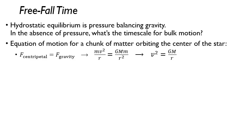The equation of motion is set up much like Kepler's third law. The centripetal force for this bulk of matter orbiting the center of the star has to equal the force of gravity. We write our centripetal and gravitational forces in the usual ways, cancel the little mass and one power of radius to get this relation.